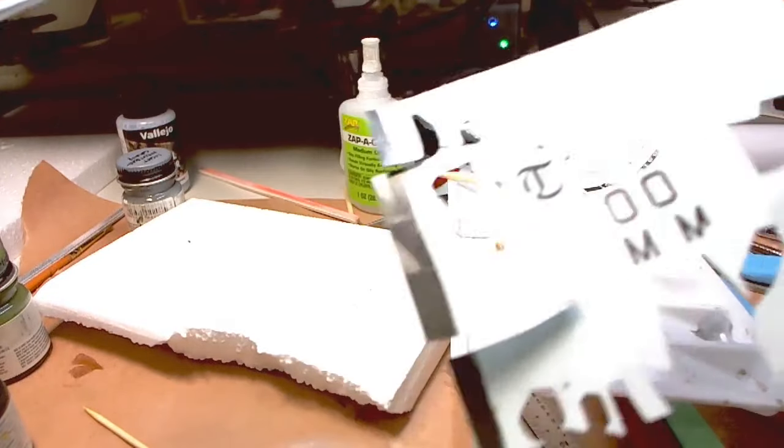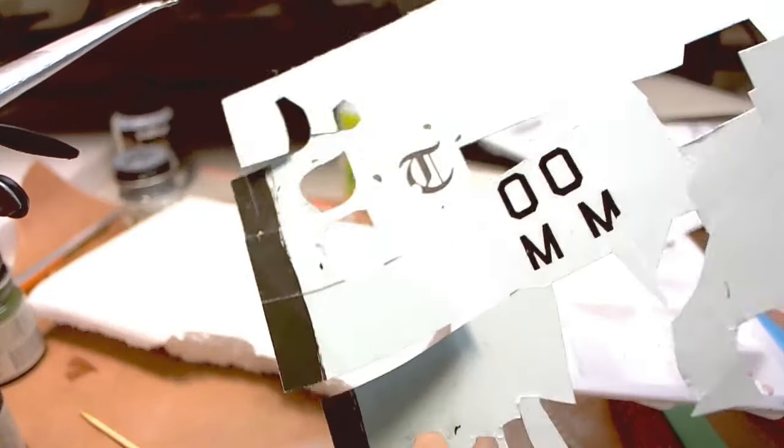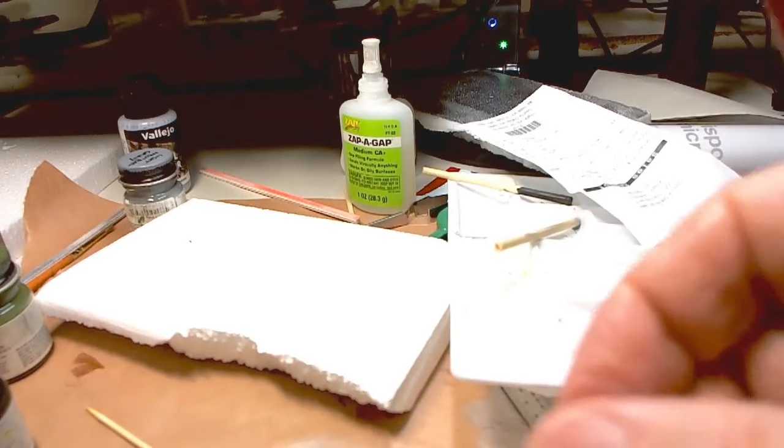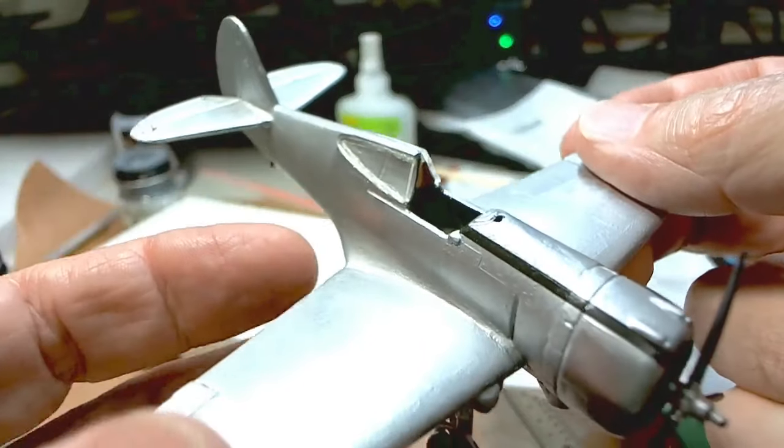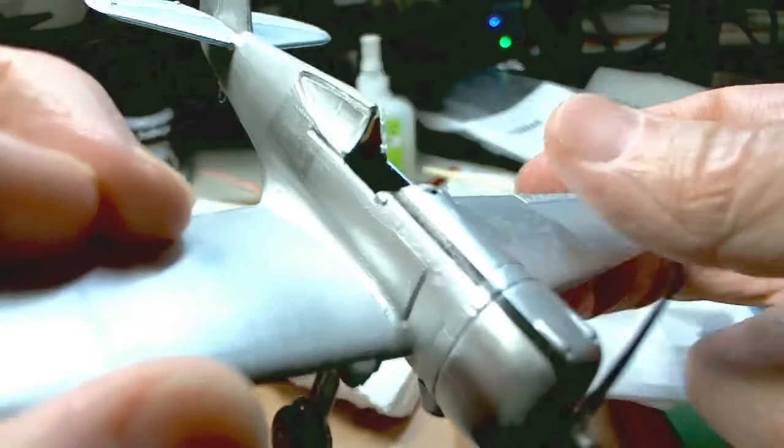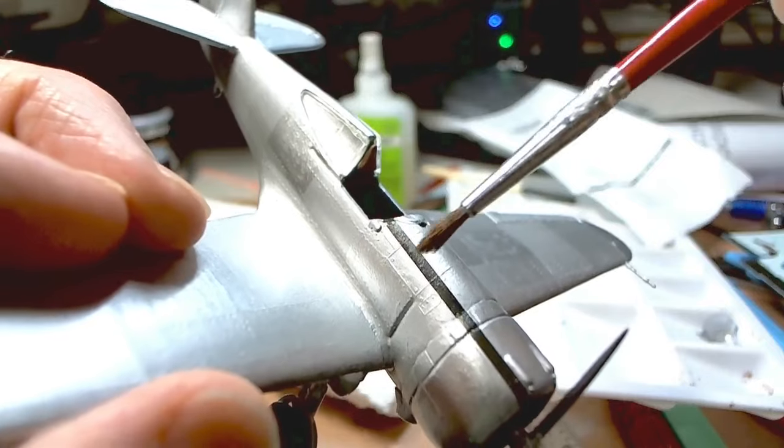I painted along the edge, let it dry, cut it with an exacto knife into strips, and then the strips can be applied like so. This gives us a nice clean edge.